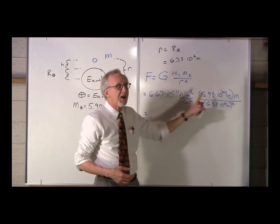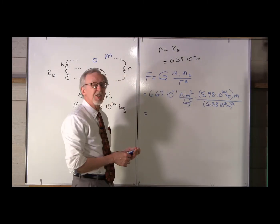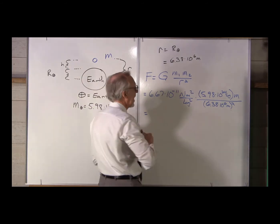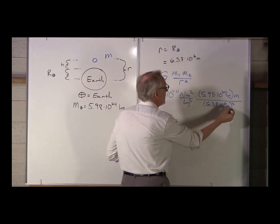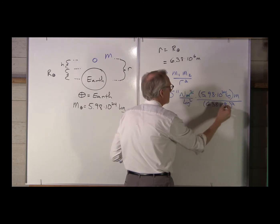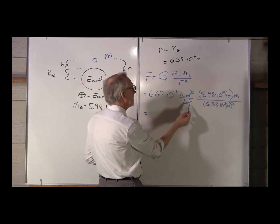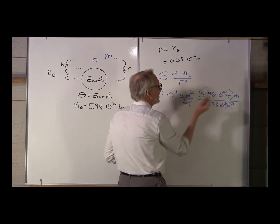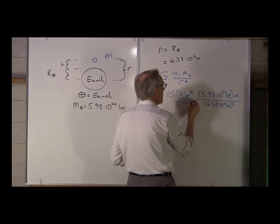Now let's divide that all out. Let's look at the units first. Notice we have meters squared and meters squared, so the meters squared cancel. We've got kilograms squared, but we've only got one factor of kilograms, so one of those kilograms will cancel. So we end up with — remember, that's the mass M — newtons divided by a kilogram.